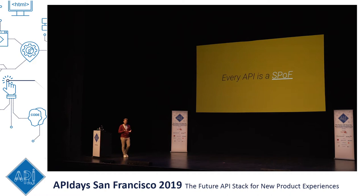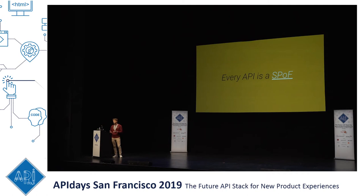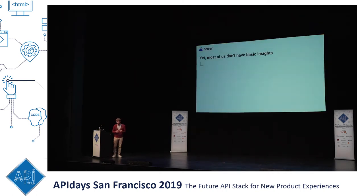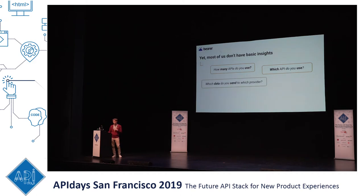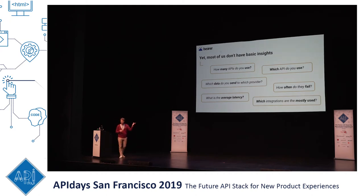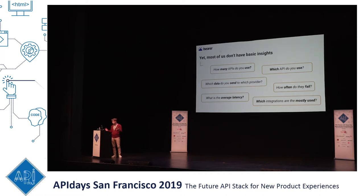One key thing to keep in mind is to treat third-party APIs as a single point of failure. If you build 30 API integrations, you've just added 30 single points of failure to your application. If you start thinking about it this way, you'll change how you build them. And if you ask basic questions — how many APIs do you use, which ones, what data goes where, how often do they fail, what's the latency, which integrations are most used — most people don't have those answers without digging into their codebase.